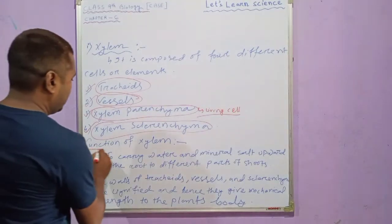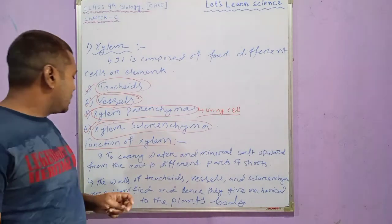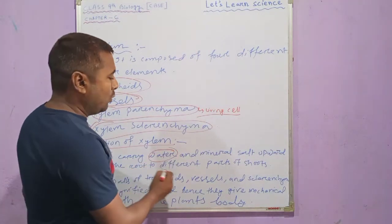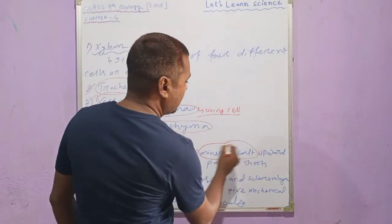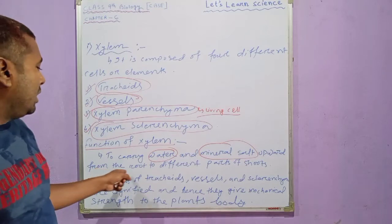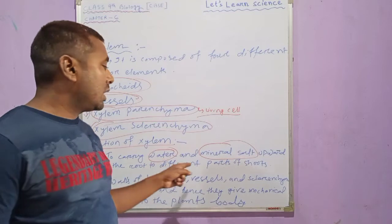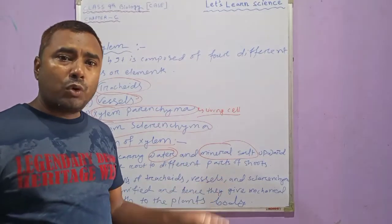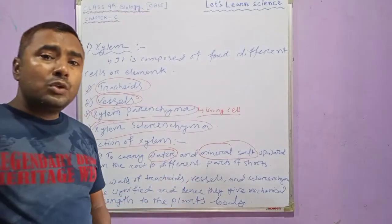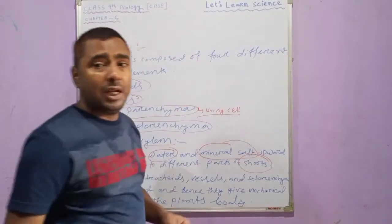The main function of xylem is to carry water and mineral salts upward from the soil with the help of roots — from the root to the different parts of the shoot, that is, to the aerial parts of the plants.